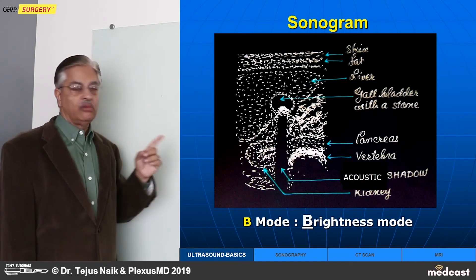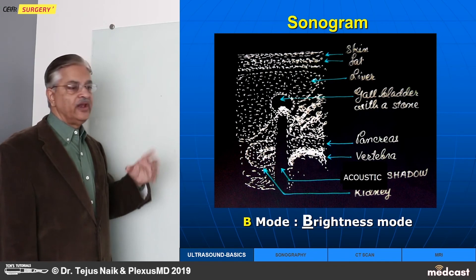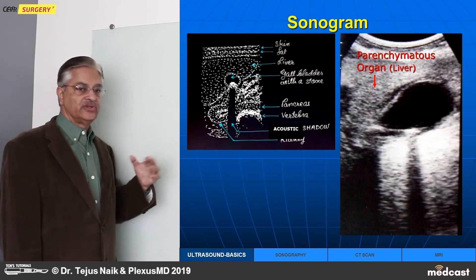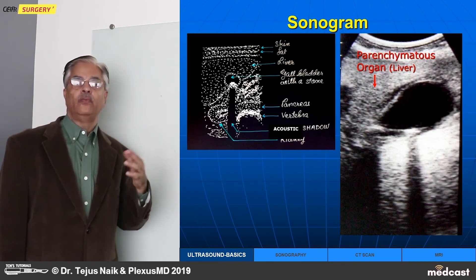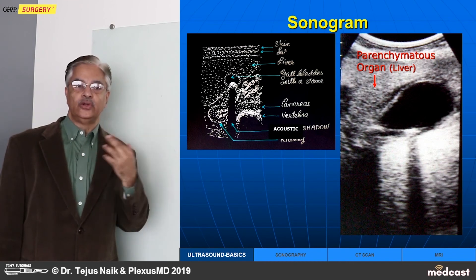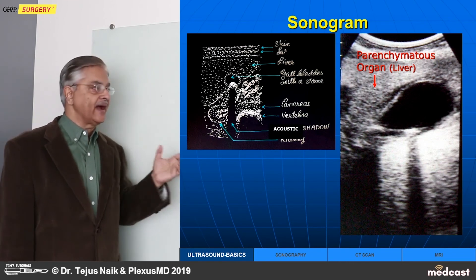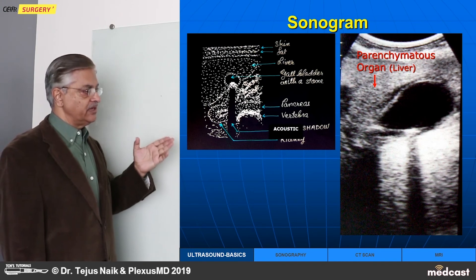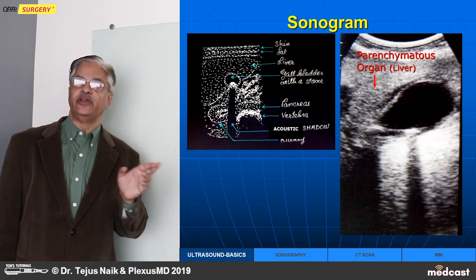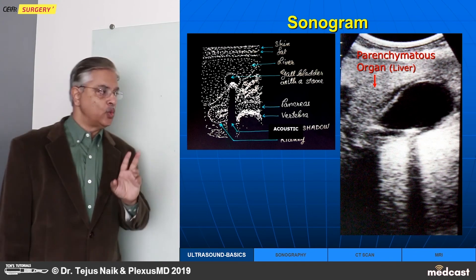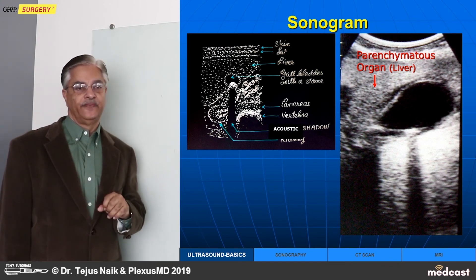This shows the gallbladder. Because fluid will not have any echoes, the fluid is without echo, or echolucent, and that is why it is generally black. This picture is negative, that is why it is black. It can be turned into a positive film in which the fluid would be seen as white, but conventionally this is how it is shown.